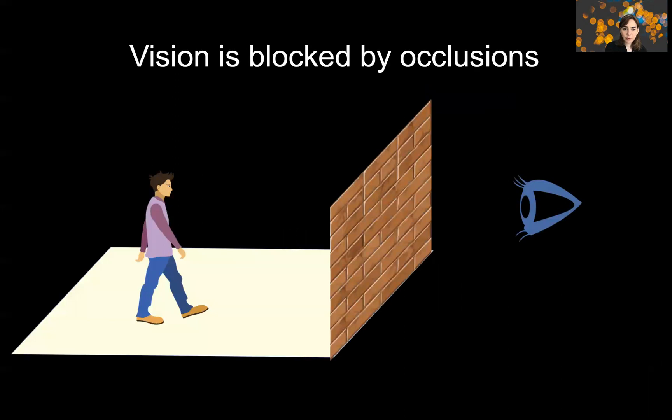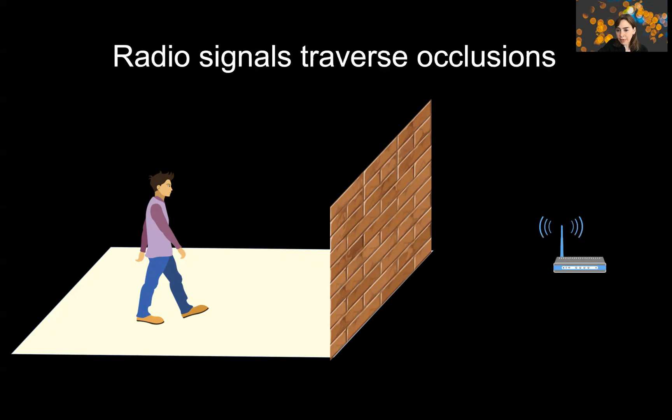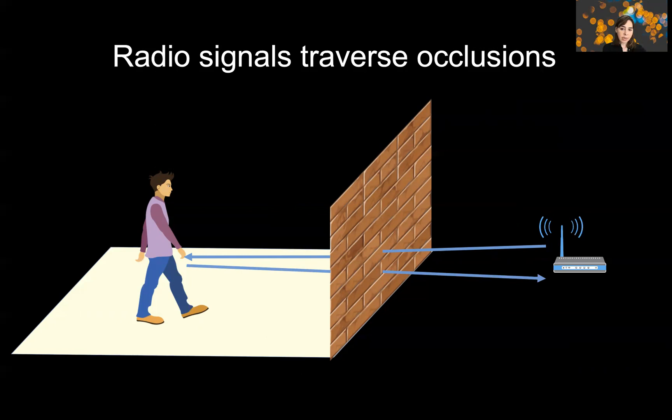In computer vision, we use visible light to see objects. However, visible light does not traverse occlusions and walls. But if we allow ourselves to use another part of the spectrum, particularly radio signals, the radio signals traverse walls and occlusions, and they reflect off the human body because our bodies are full of water. And if we analyze these reflections using a neural network, then we can start being able to track some form of through-wall vision.